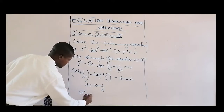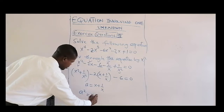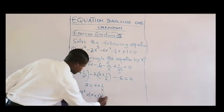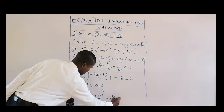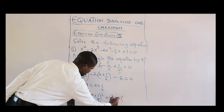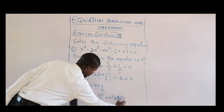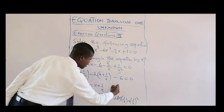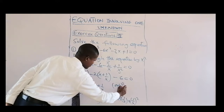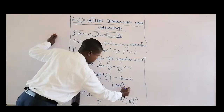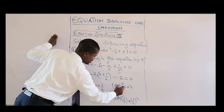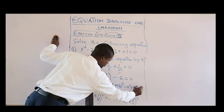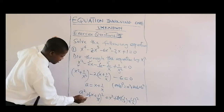If you compute a squared, that is (x + 1/x)², and using the expansion (a + b)² = a² + 2ab + b², we get x squared, plus two times x times one over x, plus one over x squared.